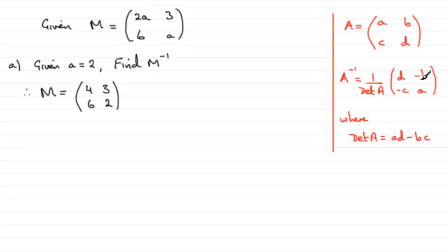And then all you do is you switch these two numbers round, they swap places, and then you change the signs of these two values here. So that's what we have here.